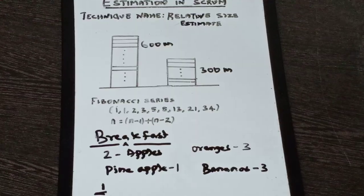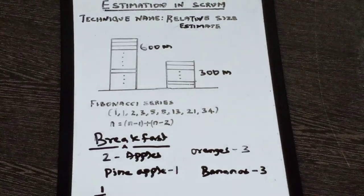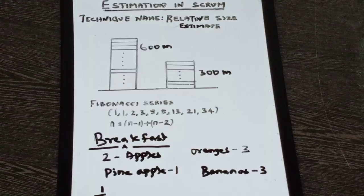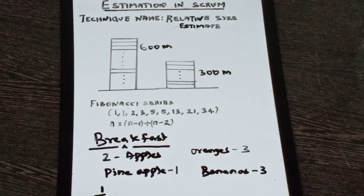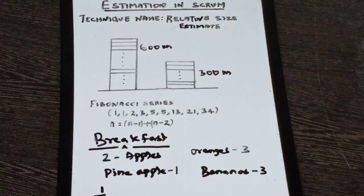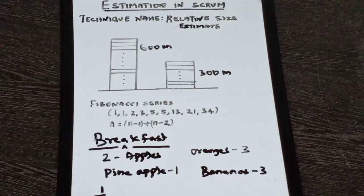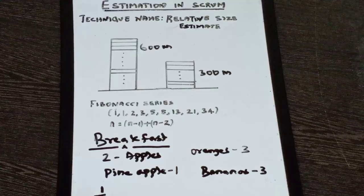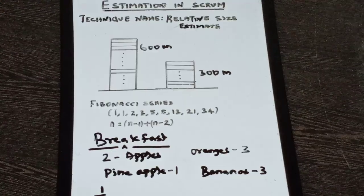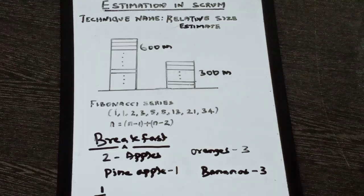And so the way we do is, we use a poker card. So once you have a reference as one, the simplest, easiest story, the second user story the product owner reads out. Each team will have a deck of cards with the Fibonacci series numbers. So I go through, I think through, and I say if this is one, how difficult is this? If it is three times difficult, I pick up three. If it is five times, I pick up five. And if it is seven times difficult, I pick up eight because there is nothing called seven in the series. So I pick up eight. So each team picks up a card, they put it down, and once everyone has put the card, you turn the card and then note down the readings.